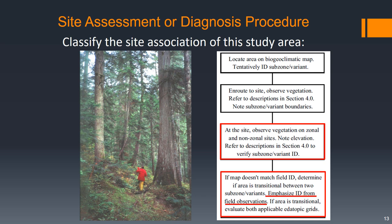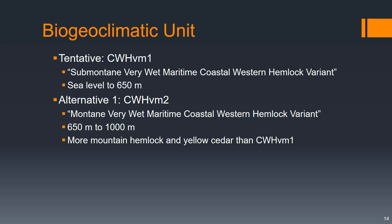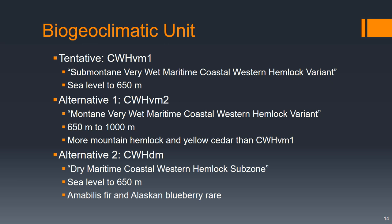Our tentative variant's elevation goes from sea level to 650 meters. The CWH-VM2 variant is a little bit higher in elevation at 650 to 1,000 meters, so that should give us a hint about which one we're in. As for vegetation differences, that variant has more mountain hemlock and yellow cedar than our tentative variant. The dry maritime coastal western hemlock subzone also has about the same elevational range, so that won't help us separate it from our tentative classification.